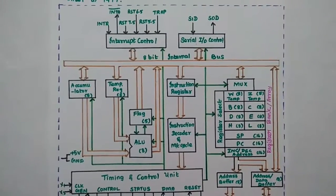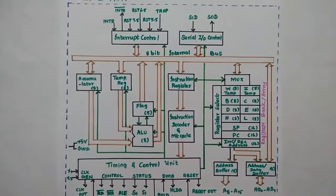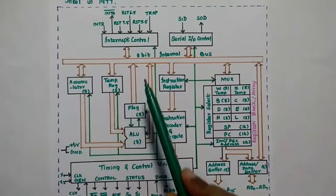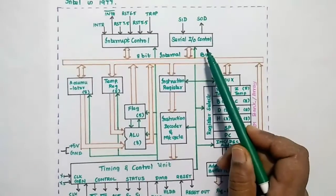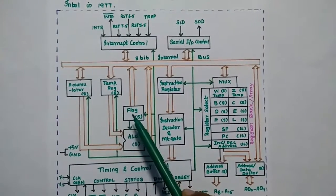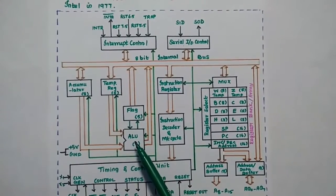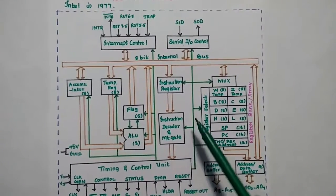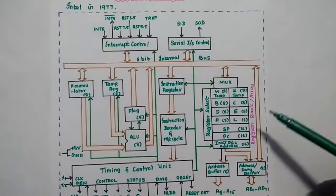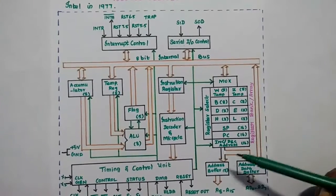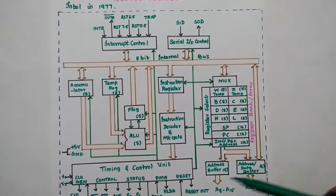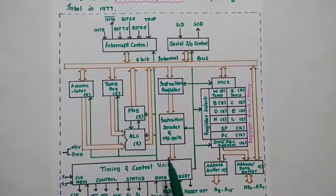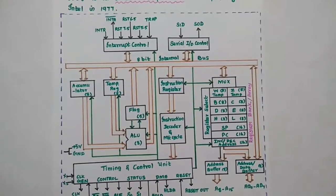This is the architecture of the 8085 microprocessor. It has important functional units: interrupt control, serial input-output ports, accumulator, flag register, arithmetic and logic unit, instruction decoder and machine cycle encoding, instruction register, register array, address buffer, address-data buffer, and timing control unit.